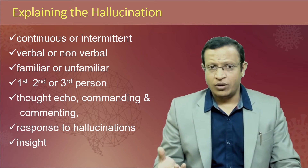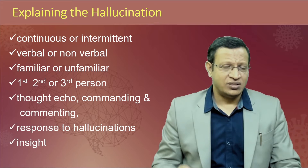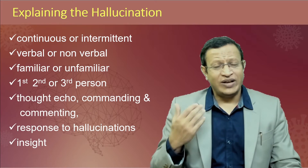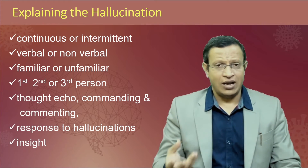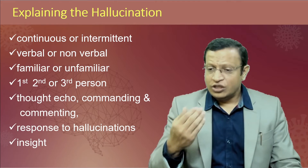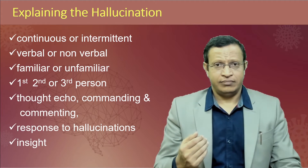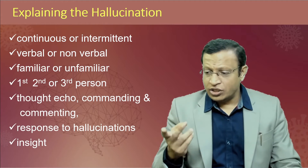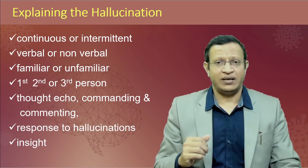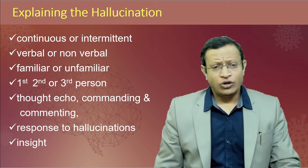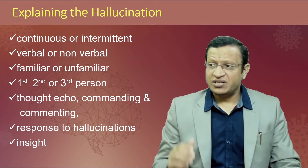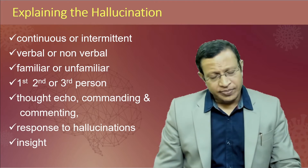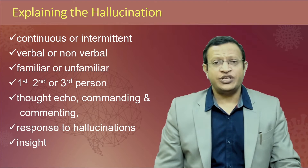Types of auditory hallucination: first person, second person, and third person. First person is the person hearing his own voices — whenever he thinks, his thoughts are spoken aloud. Second person is voices directly talking to the patient — commanding or commenting directly to the patient. Third person is two voices discussing about the patient; the patient is the third party. Also, what is the response to the hallucination? Whether the patient starts arguing with them, or thinks somebody else is producing these voices and starts fighting with them. Whether the patient has insight or not. All this explanation has to be given with regard to hallucination.